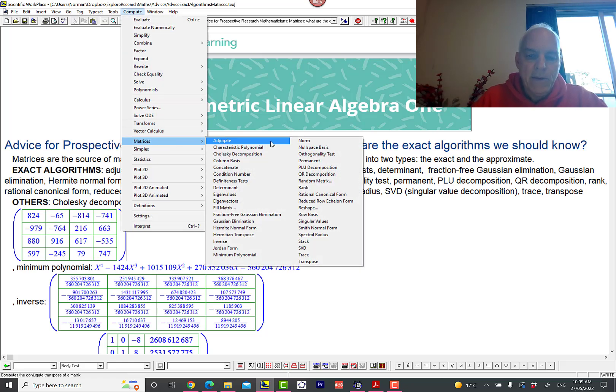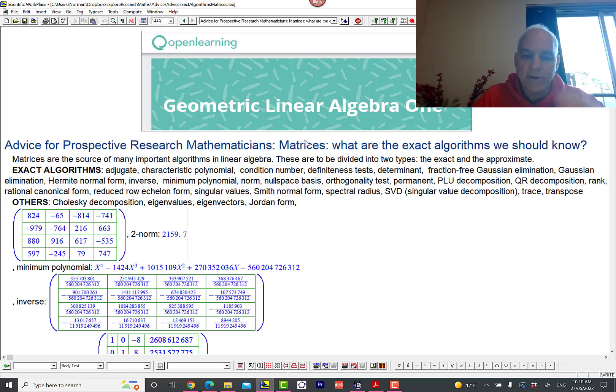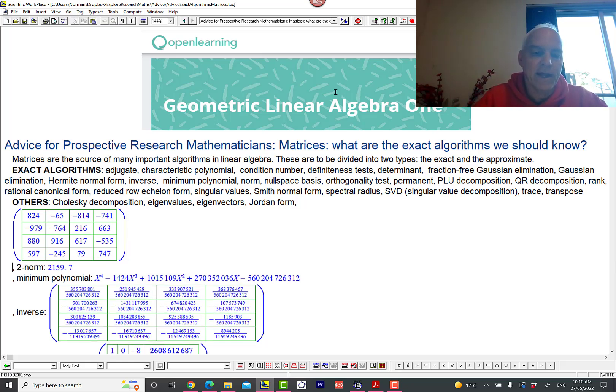Then we have the norm. The norm is somehow utilizing the Euclidean structure of a space on which this thing acts, and that is an approximate algorithm as you can sort of see from the fact that we're getting a decimal rather than a fraction. So norm has to be moved over here.